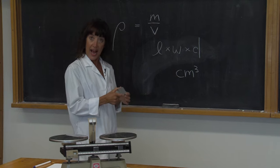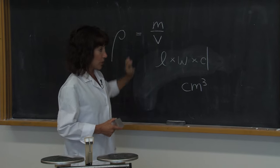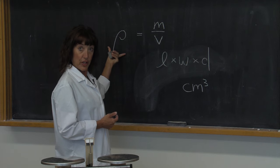Once you have the value for the mass and the value for the volume, you will simply divide the mass by the volume and arrive at your value for density.